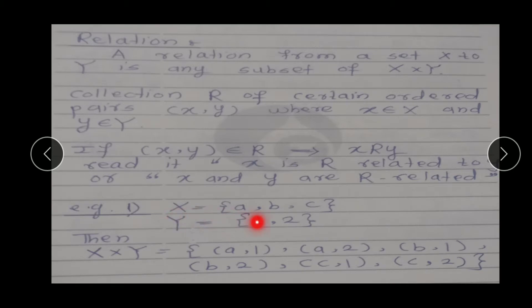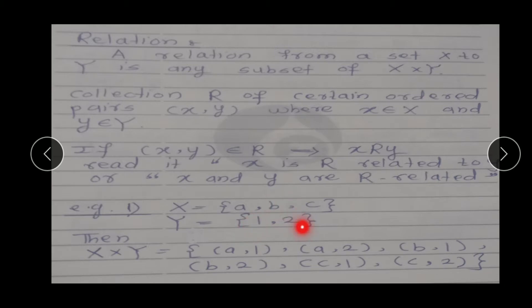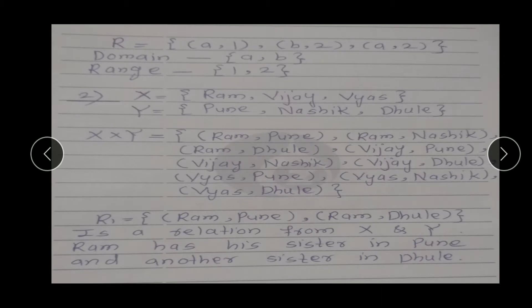Let us consider some examples. Suppose our capital X = {a, b, c} and our set Y = {1, 2}. Then X cross Y, which we have already studied, will be: {(a,1), (a,2), (b,1), (b,2), (c,1), (c,2)}. Now, any subset of X cross Y will be a relation. For example, let our R = {(a,1), (b,1), (a,2)}. So this is an example of a relation.